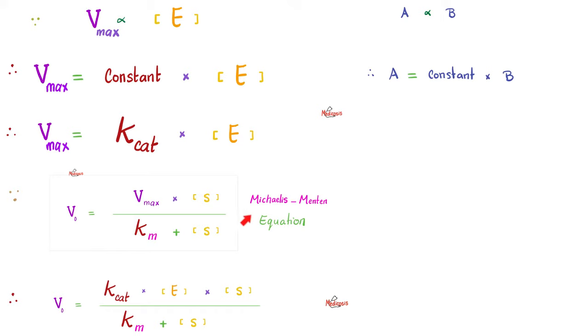And of course, you know from Michaelis-Menten equation that Vmax was upstairs. Can I remove Vmax and replace it with K-cat times enzyme concentration? Absolutely. And the equation now looks like this.